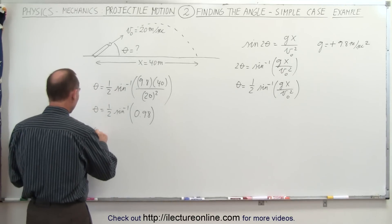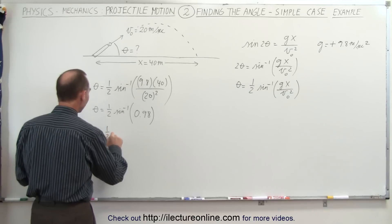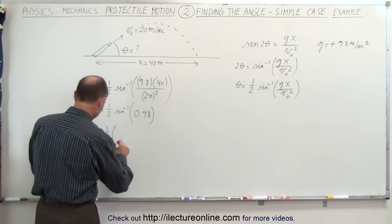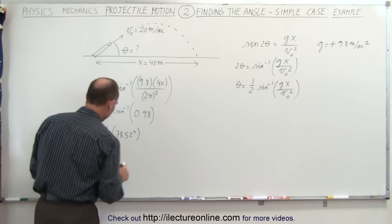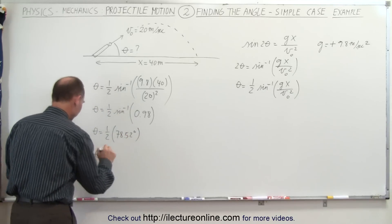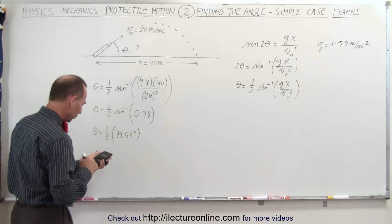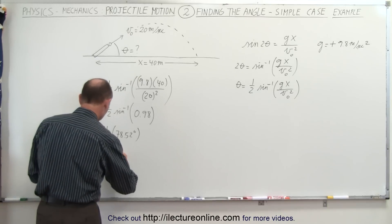It means that theta is equal to 1.5 times inverse sine of that is 78.52 degrees, and therefore theta is equal to half of that, which is 39.26 degrees.